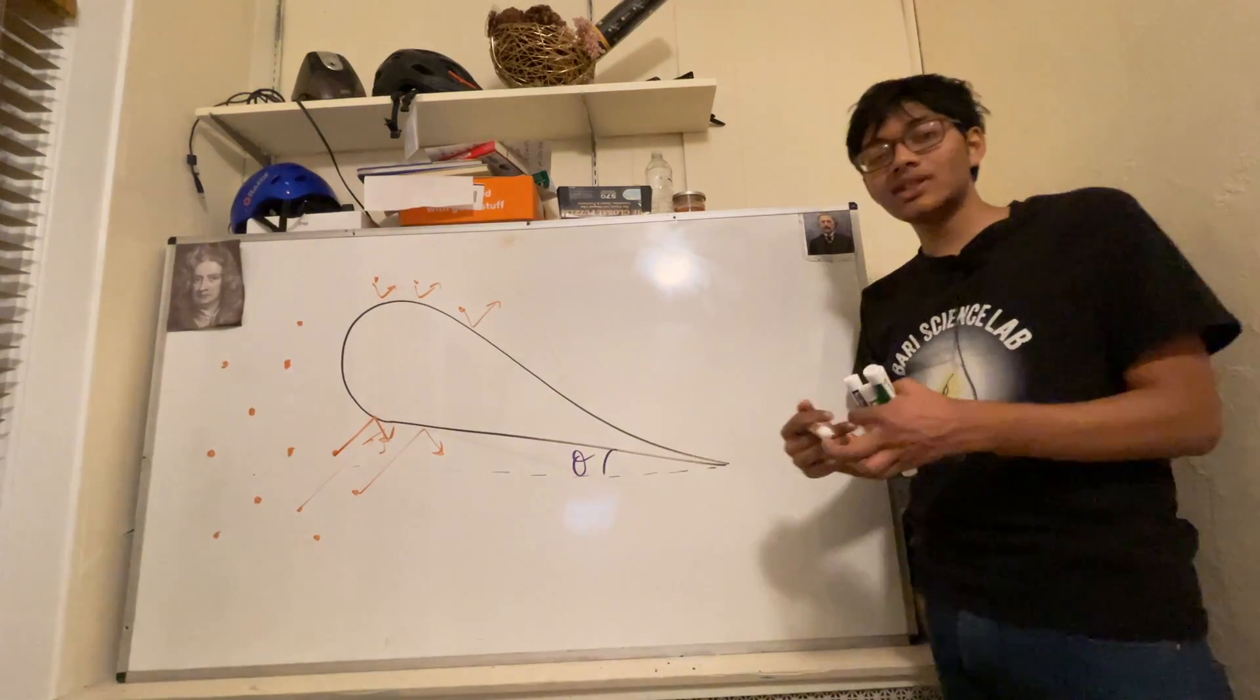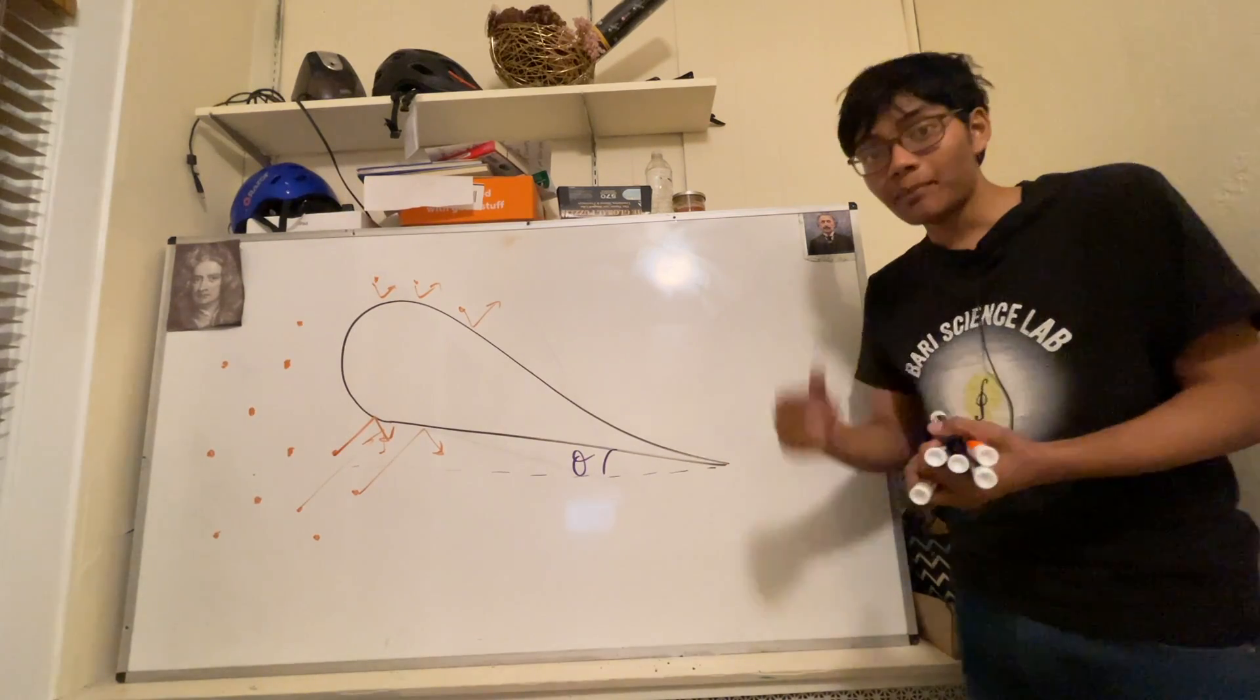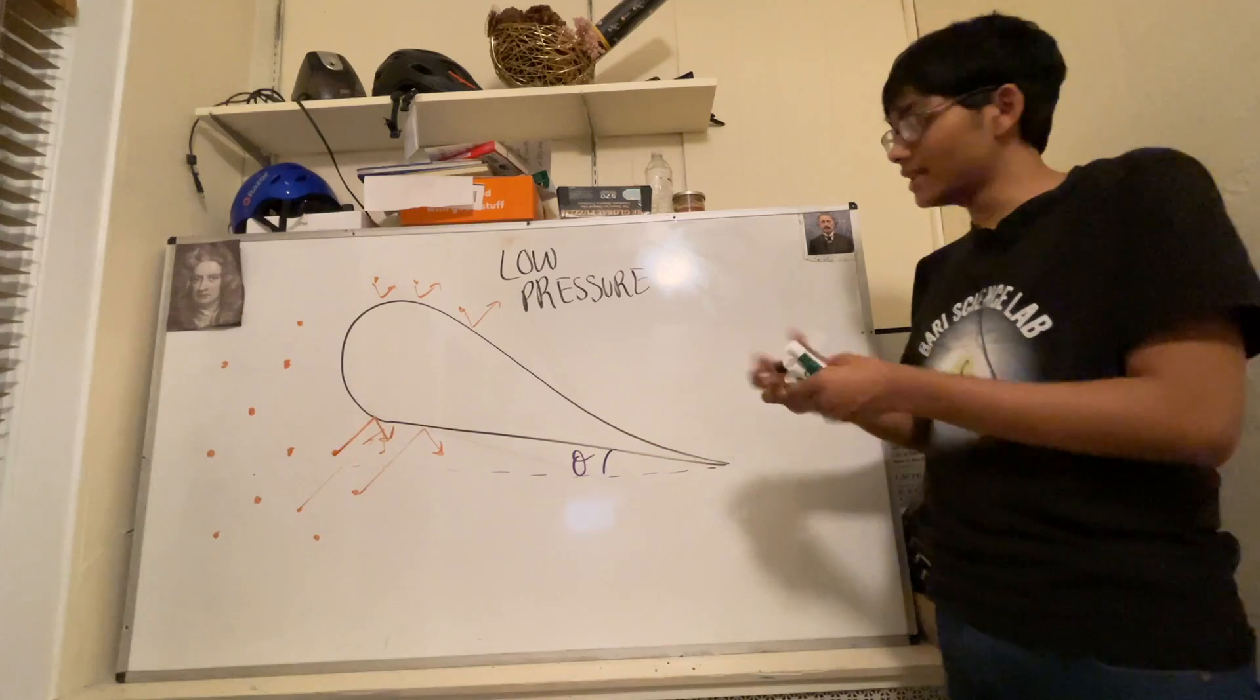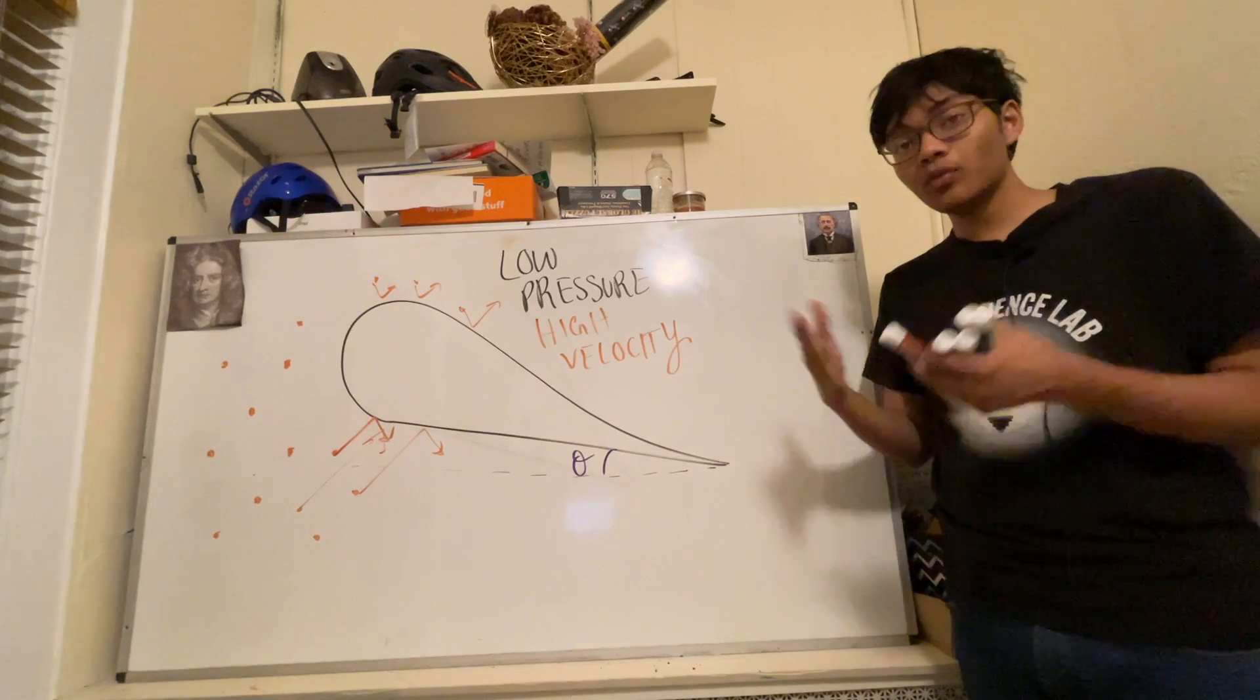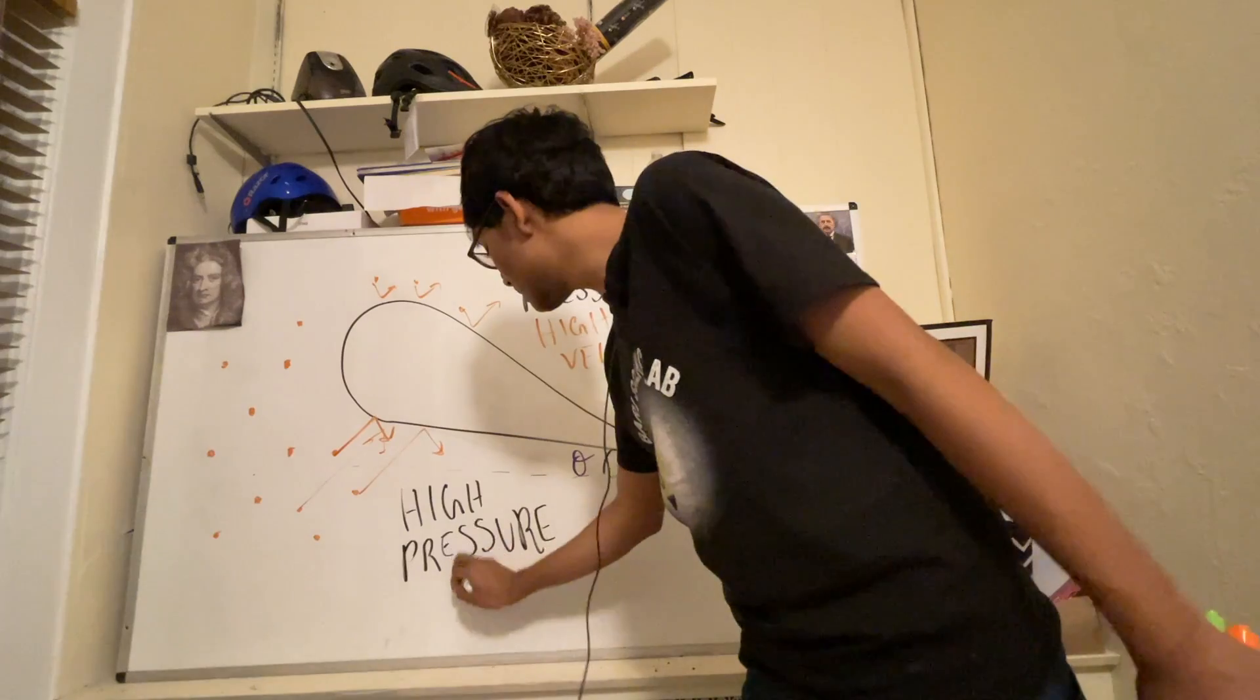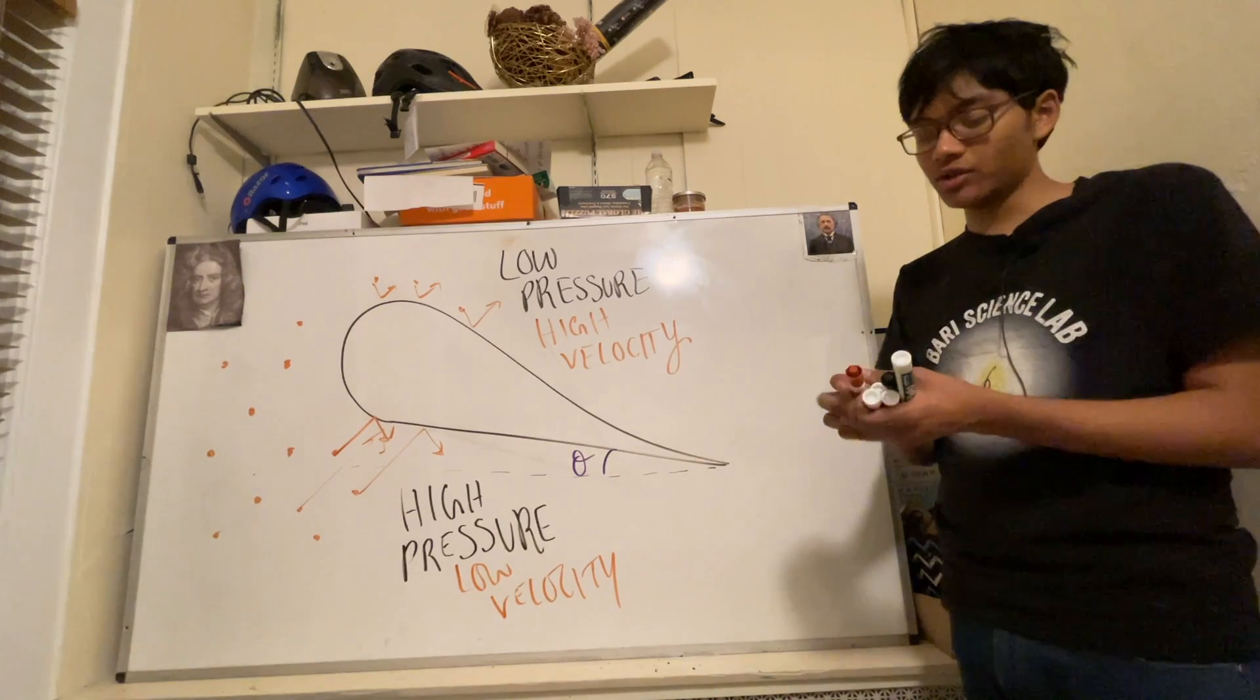So you've got all these bouncing molecules, and you've got a lot of high velocity molecules on the top, and so high velocity, by Bernoulli's principle, creates a low pressure. But on the other hand, on the bottom of the airfoil, we have a high pressure created by the low velocity. This high pressure is due to the low velocity, or low kinetic energy, of the molecules in the bottom of the airfoil. And so you have a pressure differential.